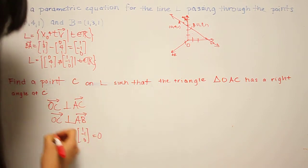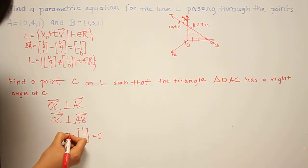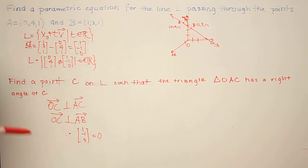So we know that the dot product of OC and (1, -1, 0) must equal 0.